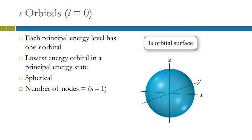So the s orbitals are the lowest orbitals in any principal energy state. They're spherical, and the number of nodes corresponds to n minus 1. So for n equals 1, there's no node.